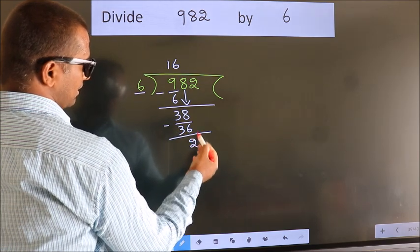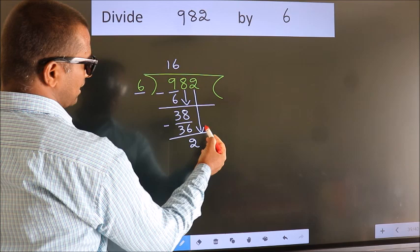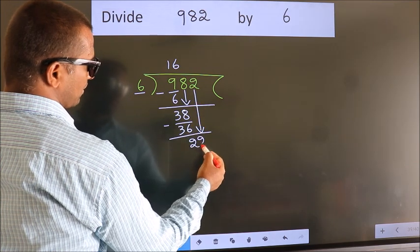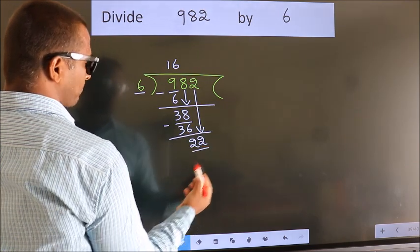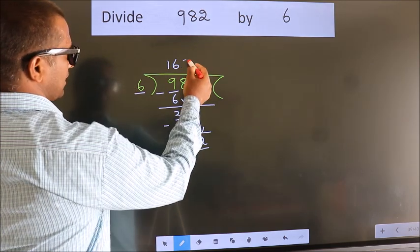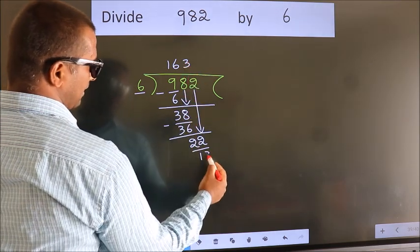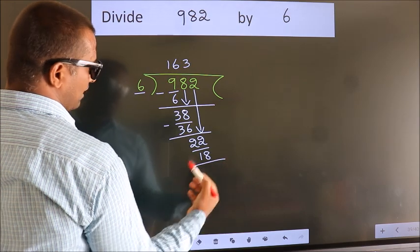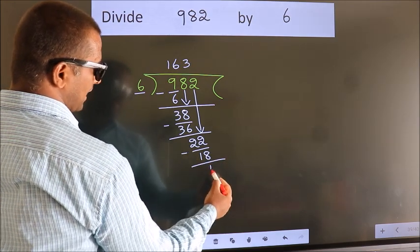After this, bring down the beside number. So 2 down. So 22. A number close to 22 in the 6 table is 6 times 3 is 18. Now we subtract. We get 4.